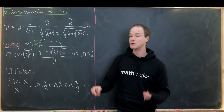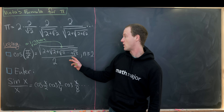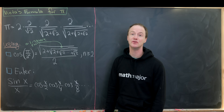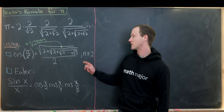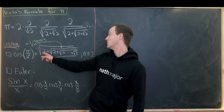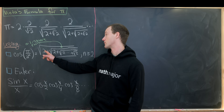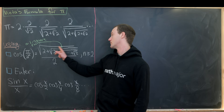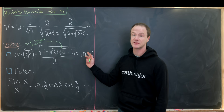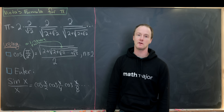We're going to use two nice results in order to prove this. The first involves the exact value of cosine of π over 2^n, where n is bigger than or equal to 2. That equals this kind of nested sum of square roots of 2 — the square root of 2 plus the square root of 2 plus the square root of 2 and so forth, where we have n minus 1 total square roots, all over 2.